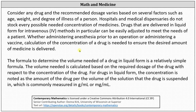The formula to determine the volume needed of a drug in liquid form is a relatively simple formula. The volume needed is calculated based on the required dosage of the drug with respect to the concentration of the drug. For drugs in liquid form, the concentration is noted as the amount of drug per the volume of the solution that the drug is suspended in, which is commonly measured in grams per milliliter or milligrams per milliliter.